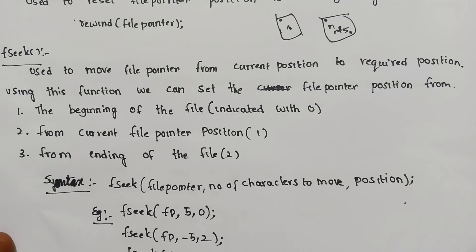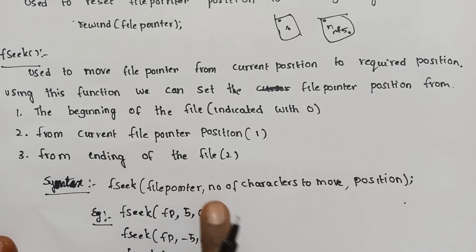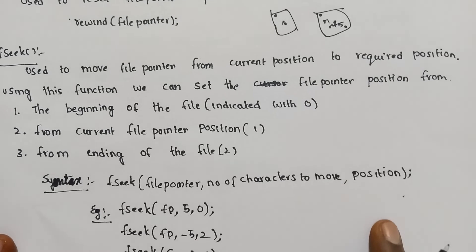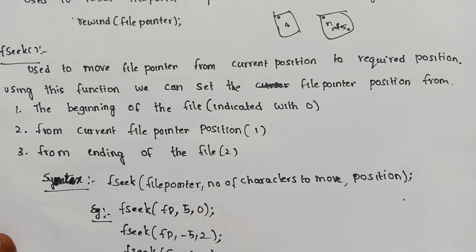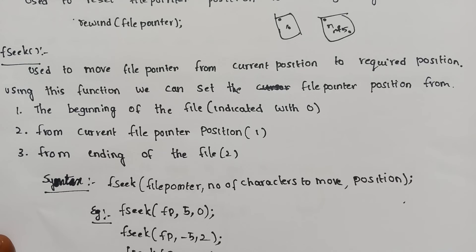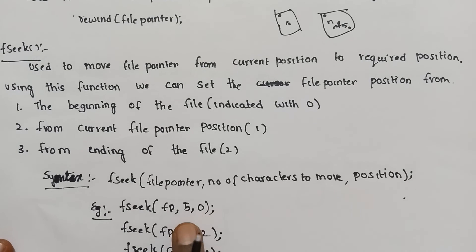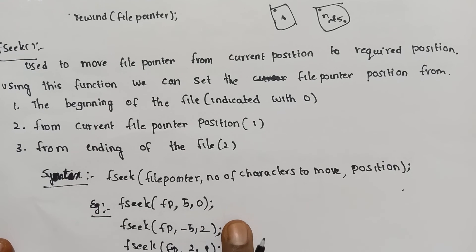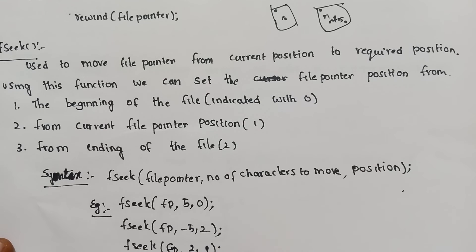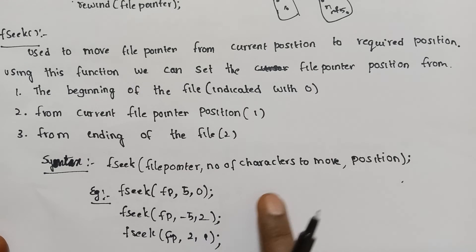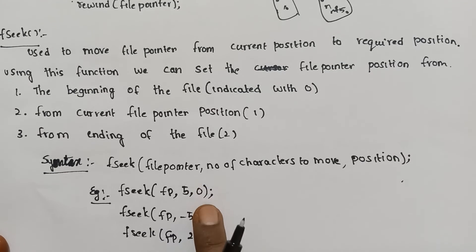The syntax for the fseek function is: fseek(file_pointer, number_of_characters_to_move, position). The position parameter specifies from where to move: from the beginning (0), from the current cursor position (1), or from the ending (2). So SEEK_SET is 0, current is 1, and SEEK_END is 2.